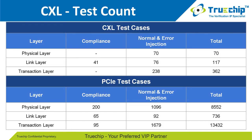Talking about test counts: for CXL physical layer, we have 70 test cases; the link layer has 117 test cases; and the transaction layer has 362 test cases. The number of test cases increases between different link widths and speeds. When the VIP is running in PCIe mode, all PCIe-related test cases can be run. In total, we have more than 15,000 test cases including CXL and PCIe.